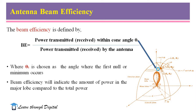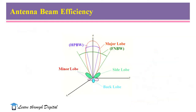In this illustration, theta1 is the cone angle through which power is transmitted or received by the antenna. Beam efficiency indicates the amount of total power in the major lobe compared to the total power.